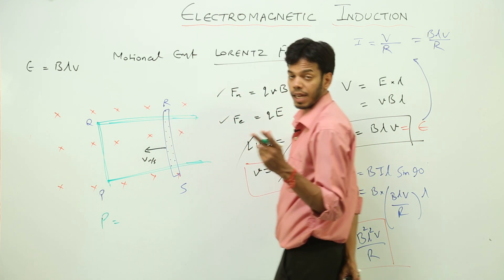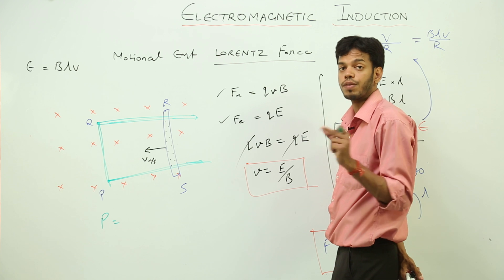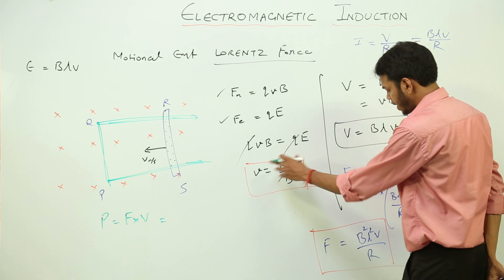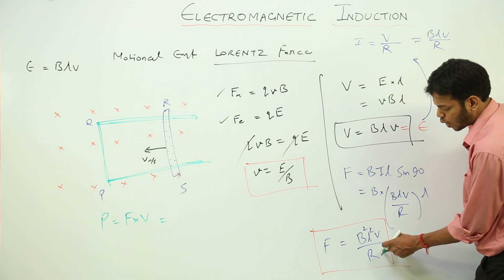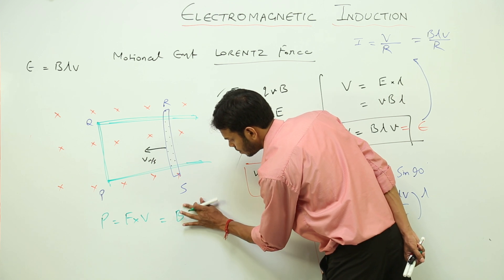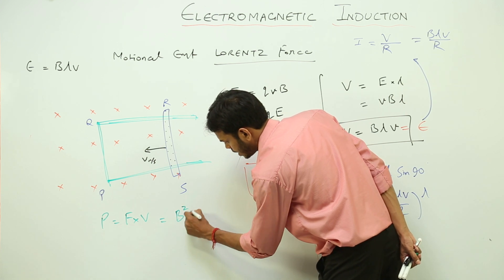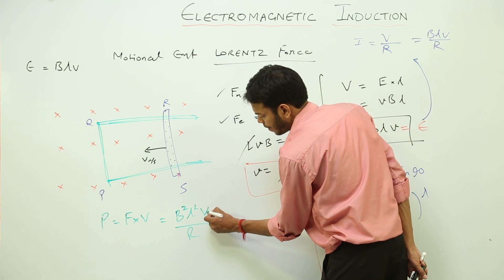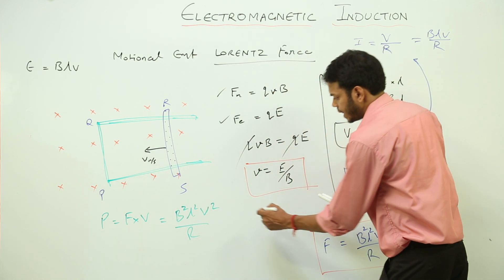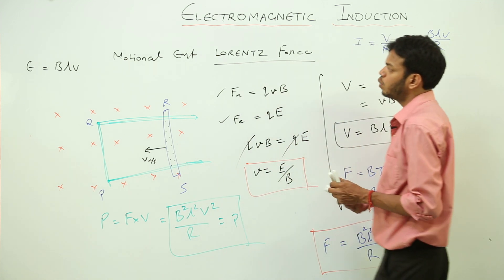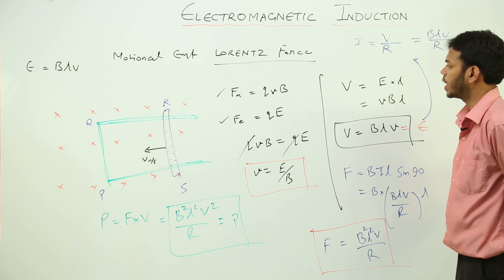Power is what? In plus 1, we have done the formula for power in terms of force and velocity. What was the formula? Force into velocity. Force, where is the force? B square L square V upon R multiplied by V. So that will give you V square. This is the expression for power dissipated by the induced voltage or induced current.